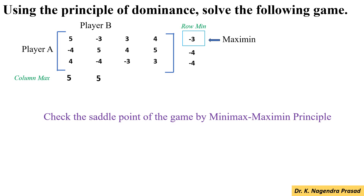In the third column, the maximum value is 4. And in the fourth column, the maximum value is 5. Among these maximum values, the minimum value is 4. And this is the minimax value.